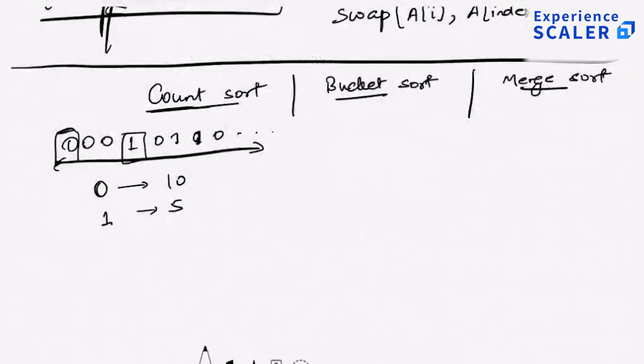My sorted array is zero 10 times, and then one five times.